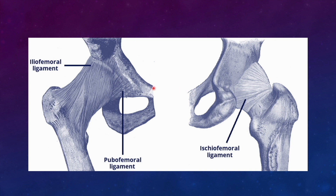The hip joint capsule has fibers in a spiral and longitudinal orientation. In extension, they are taut and do not allow extra rotational movement. When flexion is performed, they become relaxed and allow further rotational movements. Understanding normal hip movements is essential to restoring normal motion of the hip joint during any reconstructive procedure.